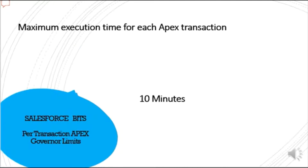Maximum execution time for each Apex transaction is 10 minutes — you can execute for a maximum of 10 minutes, after which it times out. These are the main Apex governor limits that are in place whenever Apex executes in the background.